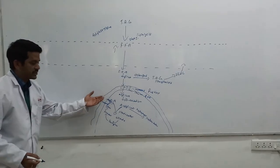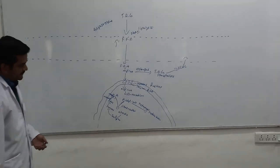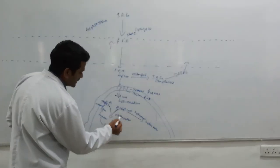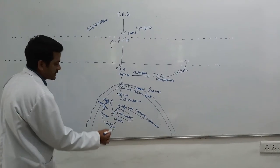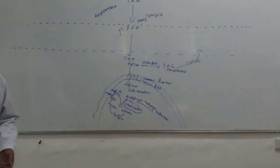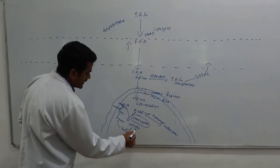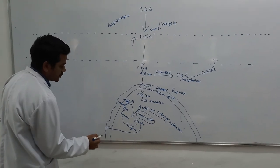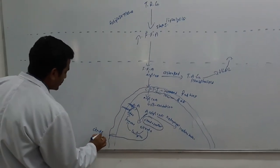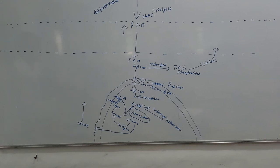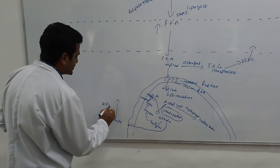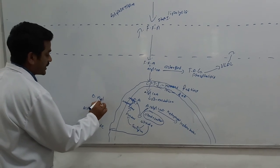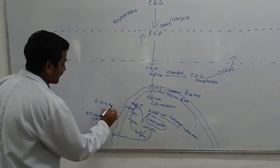In the fed state, citrate synthase is adequately present so that acetyl-CoA is converted into citrate and the cycle runs for the synthesis of ATP molecules. The citrate again enters the cytosol from the mitochondrial membrane via a transport protein. In the cytosol, the enzyme ATP citrate lyase converts citrate into oxaloacetate plus acetyl-CoA.